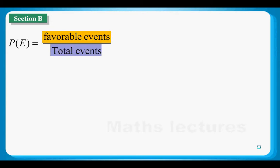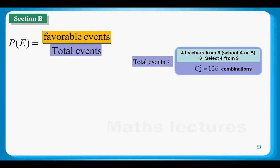Probability is talking about a fraction. For the denominator, it is the total events. For the numerator, it is the favorable events. In our case, the total events must be the total number of ways to choose four teachers from nine. We are talking about 9C4, which gives us 126 combinations — that means 126 ways to choose four teachers from nine.